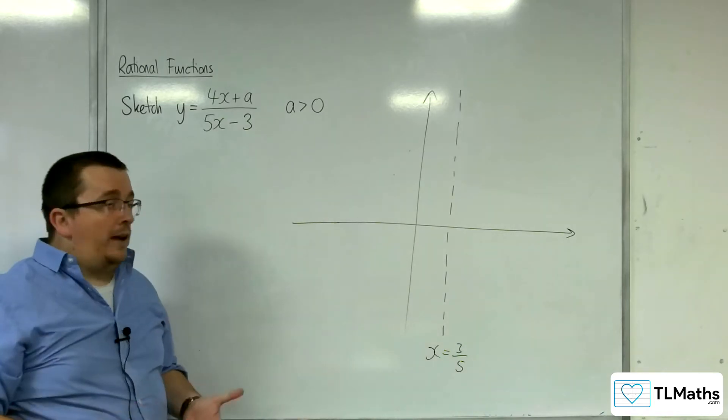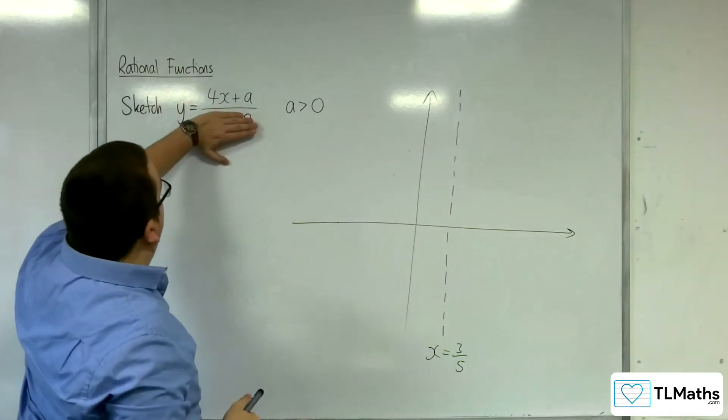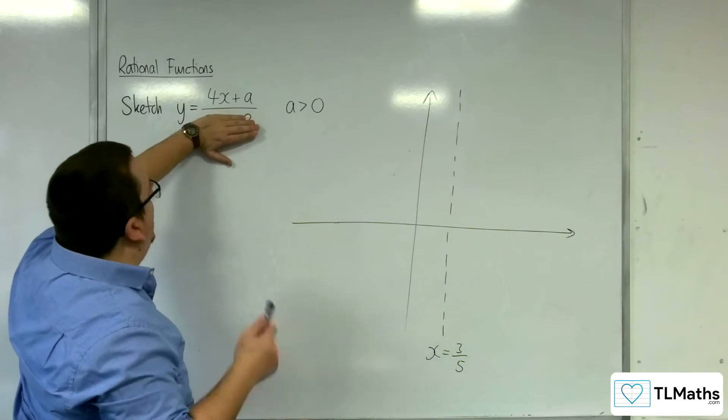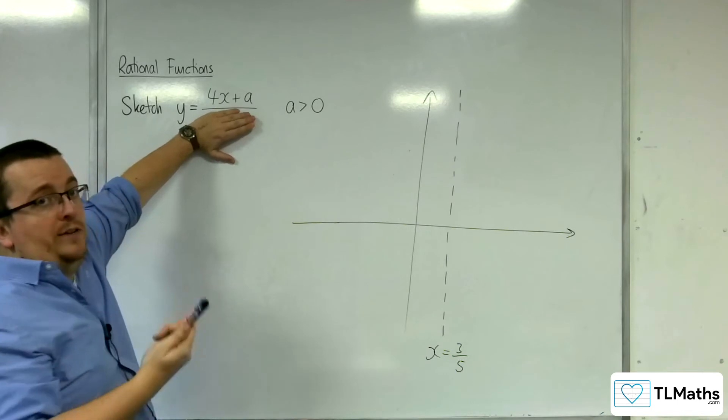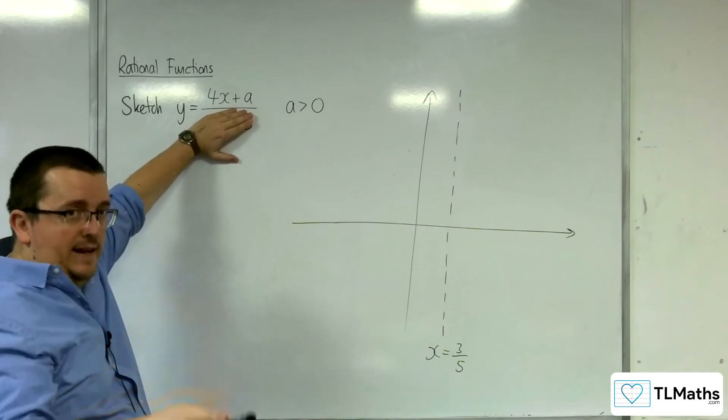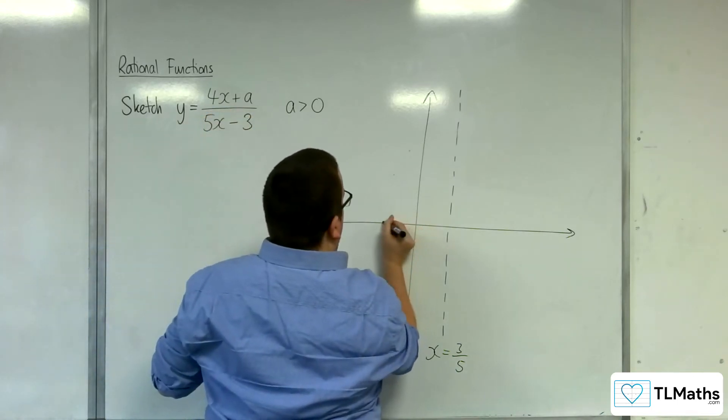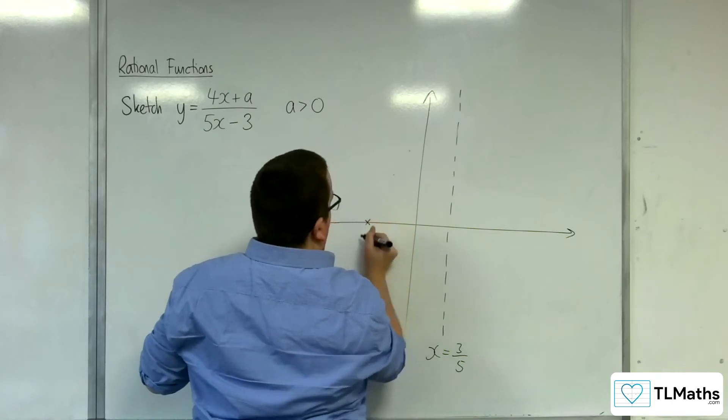Now, where is it crossing the x-axis? That is when the numerator is 0, so that would be at minus a over 4. Now, remember, a is positive, so we know that minus a over 4 is definitely negative. So minus a over 4 is going to be somewhere. Let's just pop it there.